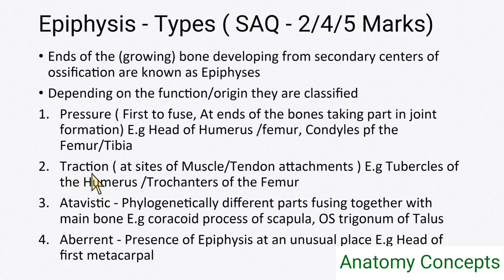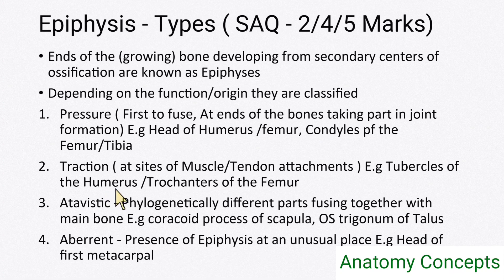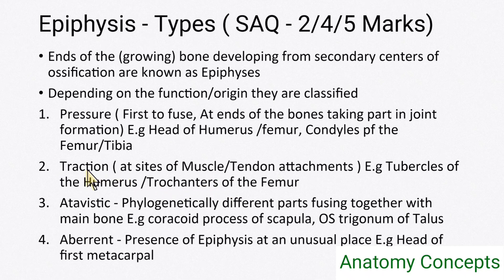Traction epiphysis is present at sites where muscles and tendons attach to bone. The traction from these attachments gives rise to bony projections. Examples include the tubercles of the humerus, where rotator cuff muscles attach, and the trochanters of the femur, which give attachment to many muscles. These bony projections arising from secondary centers at muscle and tendon attachment sites are called traction epiphyses.